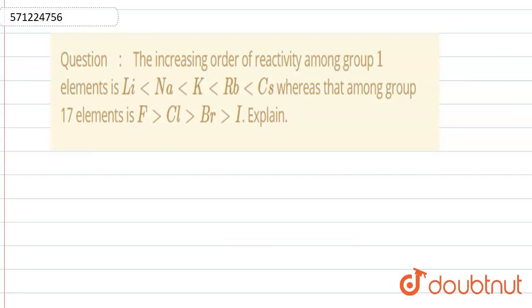Hello, the question is: the increasing order of reactivity among group 1 elements is increasing from lithium to cesium, whereas among the group 17, it is decreasing from fluorine to chlorine to bromine to iodine.